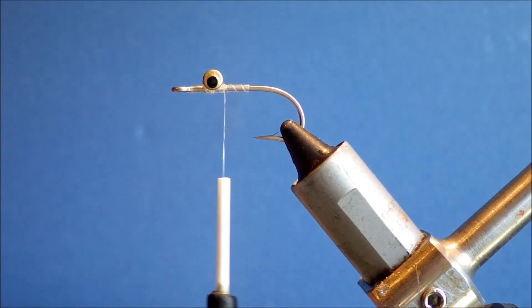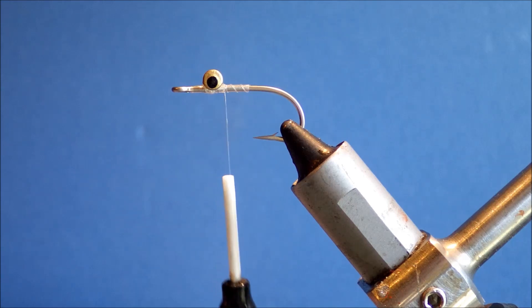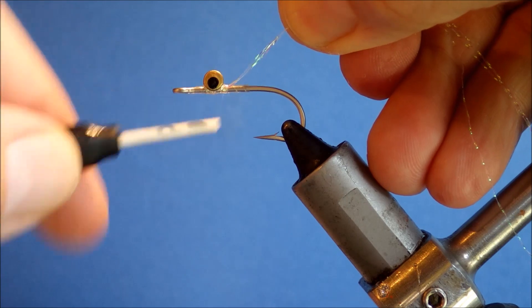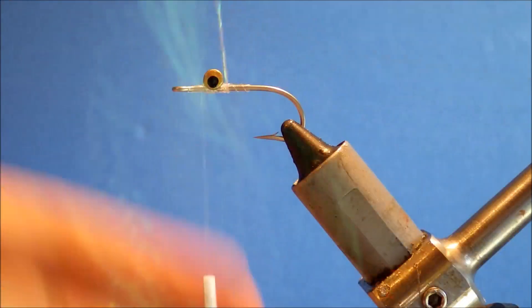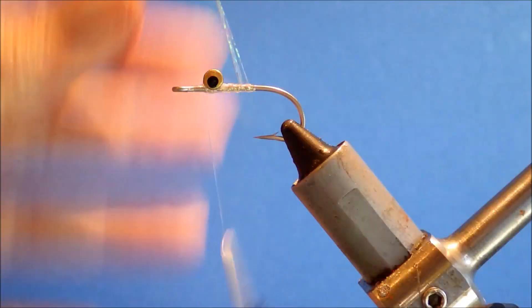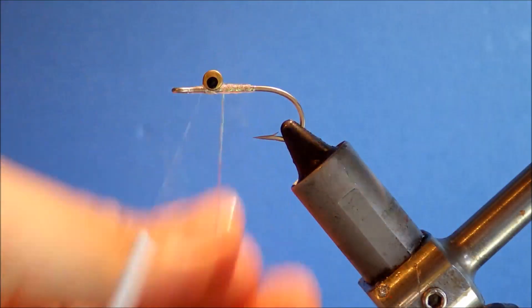So the body of this fly is just two or three strands of crystal flash. Just tie it in, wind it back. You don't need to be too fussy with this because the double layer sort of catches everyone.